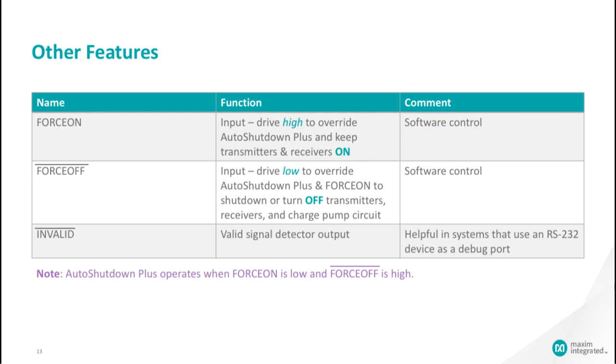Other features are force on, force off, and invalid. Force on is used to override auto shutdown and keeps the transmitters and receivers on. Force off is used to override force on and auto shutdown and turns off the charge pump circuit to save power. Invalid functions as a valid signal detector and is helpful as a debug port.